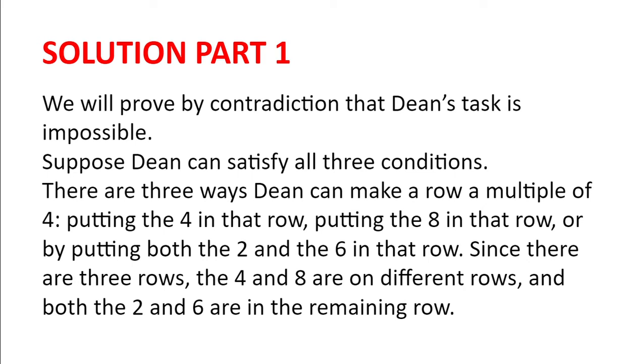There are three ways Dean can make a row a multiple of 4: putting the 4 in that row, putting the 8 in that row, or by putting both the 2 and the 6 in that row. Now since there are three rows, the 4 and the 8 are on different rows, and both the 2 and the 6 are on the remaining row.